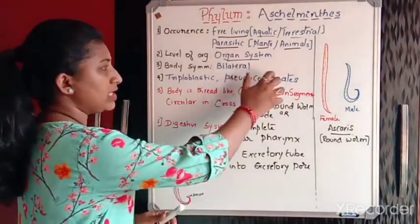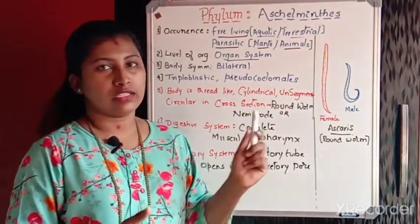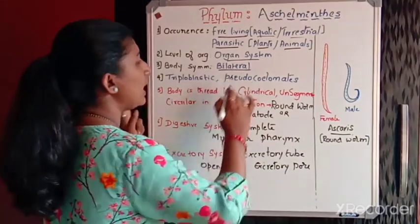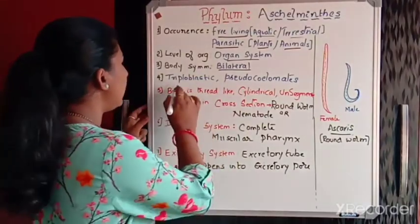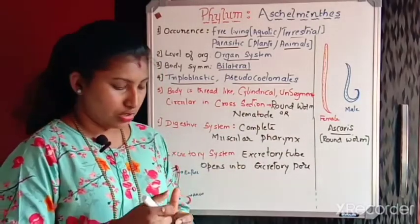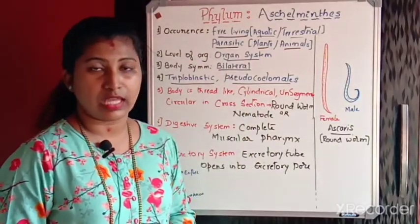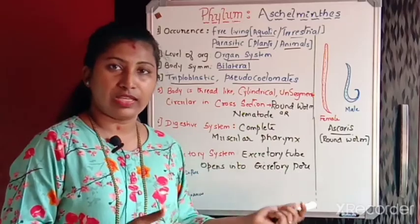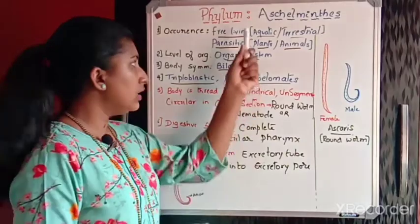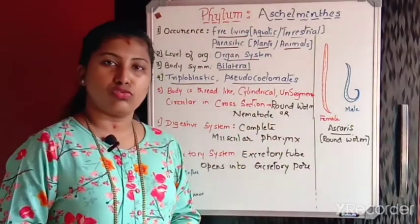For the meaning of these classification terms, you can go through the first video of our chapter. Body symmetry: they are bilaterally symmetrical animals. They are triploblastic and are pseudocoelomates. Phylum Aschelminthes is the only phylum that comes under pseudocoelomates, whereas the previous phylum Platyhelminthes came under acoelomates.